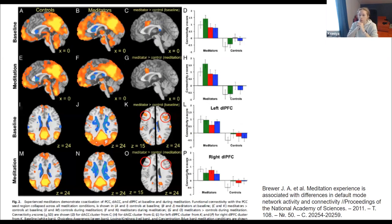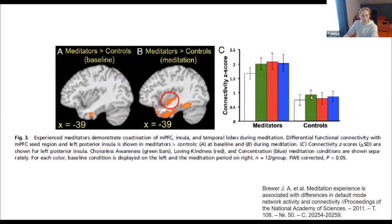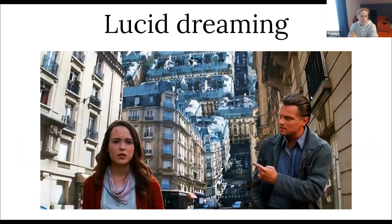It was also found that experienced meditators have a higher connection between the anterior cingulate gyrus and the medial prefrontal cortex — the executive control network was more connected in those who meditated for a long time. As you remember, the executive control network is connected with concentration on a goal.